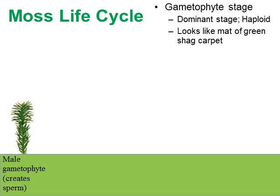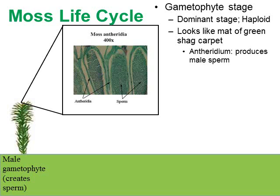With the naked eye you're not going to be able to tell if that's the male or female gametophyte — it's too small. But if we could zoom in with a high-power microscope — here we're at 400 times magnification — at the very tip of the male gametophyte there are little housing structures called antheridia. Antheridia is plural; antheridium is singular. Inside every antheridium are hundreds and hundreds of sperm cells.